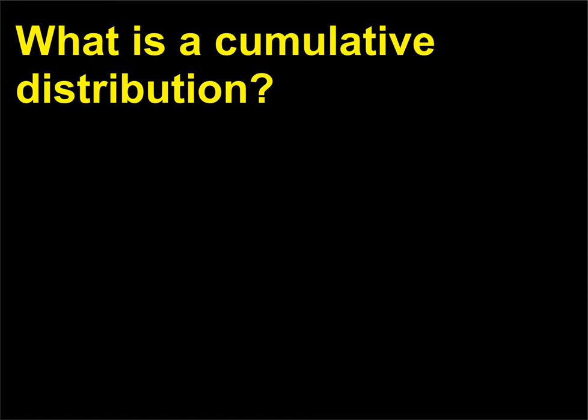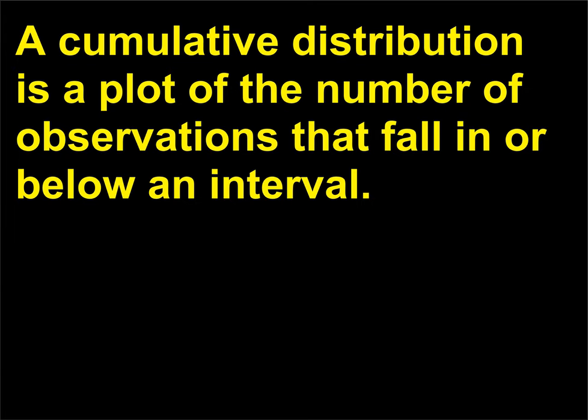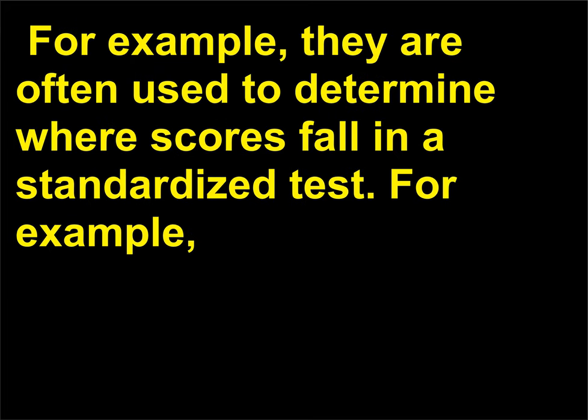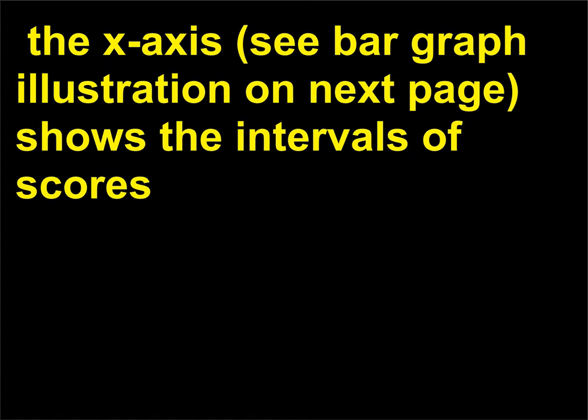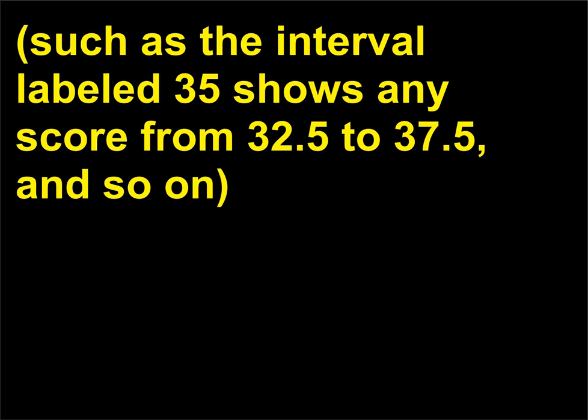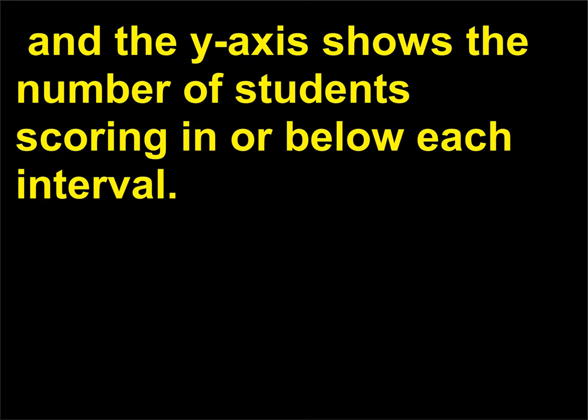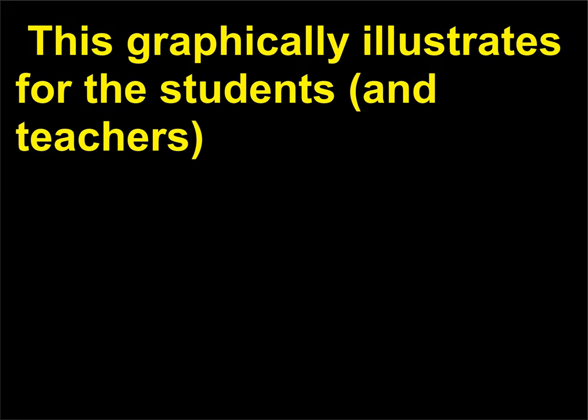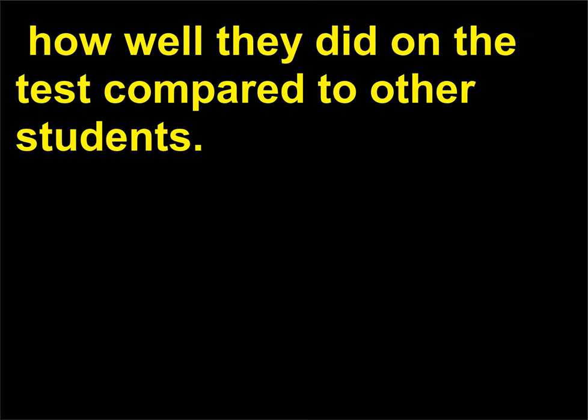What is cumulative distribution? Cumulative distribution is a plot of the number of observations that fall in or below an interval. For example, they are often used to determine where scores fall in a standardized test. The x-axis shows the intervals of scores (such as the interval labeled 35 shows any score from 32.5 to 37.5, and so on), and the y-axis shows the number of students scoring in or below each interval. This graphically illustrates for the students and teachers how well they did on the test compared to other students.